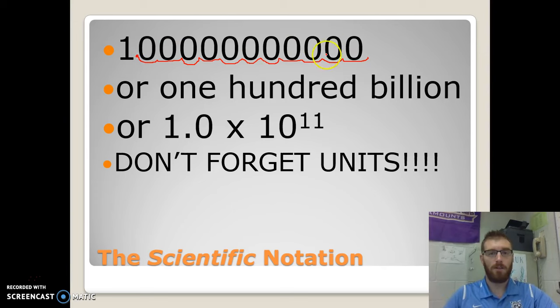And we moved our decimal place over 11 places. So that's what number goes in the exponents side. So we will rewrite it as 1.0, which we got from right here, times 10 to the 11th power.